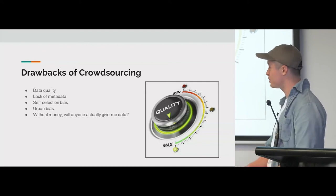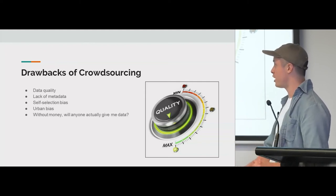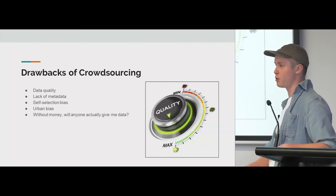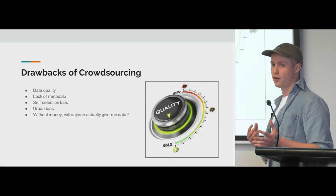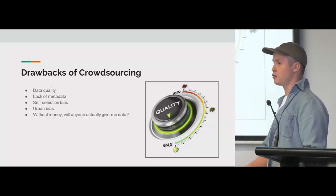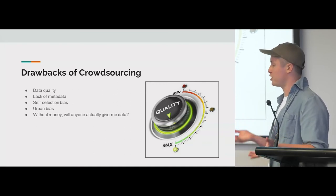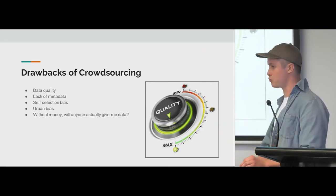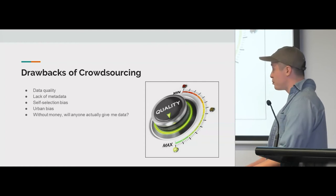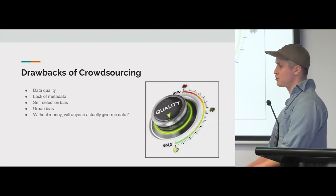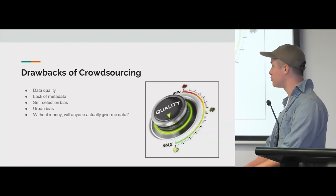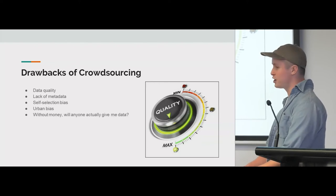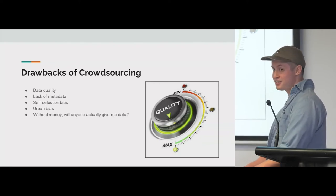Lack of metadata is also an issue. Self-selection bias is something that's quite a problem for my research — the problem that people filling out a survey, I have no way of quantifying who they are or if they live in the neighbourhood. One person could fill it in ten times, and I'm not sure if those are all valid responses. There's also an urban bias — VGI is primarily produced in urban areas, and without funding, which I didn't get any of, would anyone give me data?